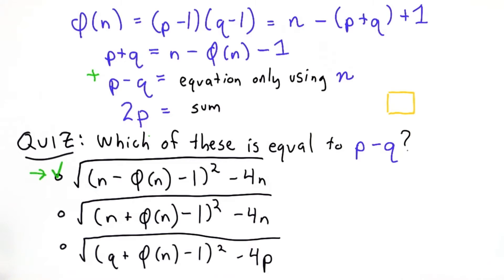So the answer is the first choice. We'll go through the steps next. The third choice is clearly useless since it's still in terms of p and q, and it's also incorrect. The second choice would be useful if it was correct, but it's just not correct.